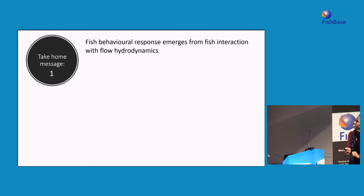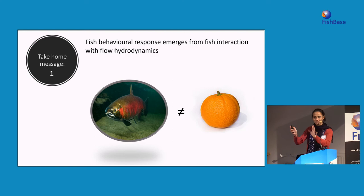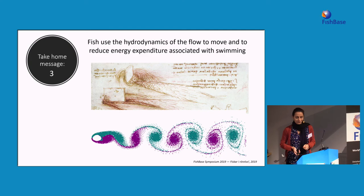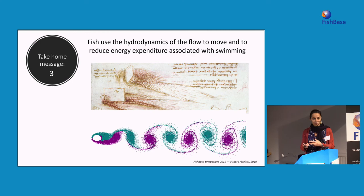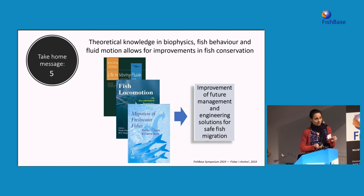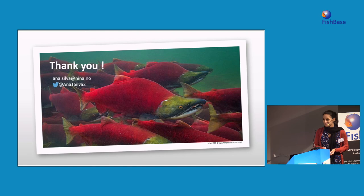Take-home messages: Fish movement emerges from the interaction with fluid hydrodynamics — it's more complex than just going with the flow. Fish can feel and react to these variations. Fish use their appendages to navigate and manoeuvre, and also use the hydrodynamics of the flow to reduce the energy needed to swim. This navigation is mediated by different hydraulic cues. And it's very important that we use all this theory and knowledge and apply it, because this will allow us to improve fish conservation. Thank you.